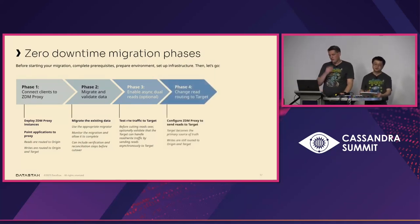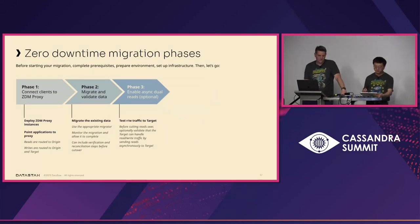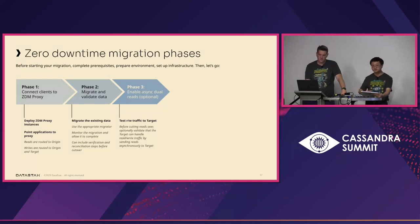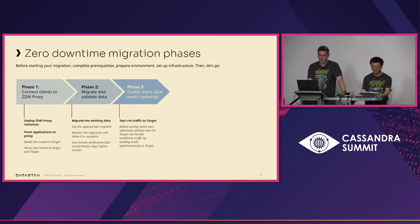To add to phase three: this optional step is an async dual read, meaning it won't increase your latency — your reads are still going from the primary cluster. The purpose is really just to introduce extra load on your target and confirm it can handle that.